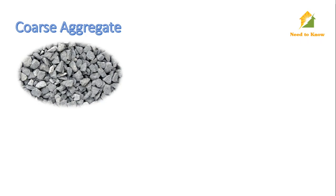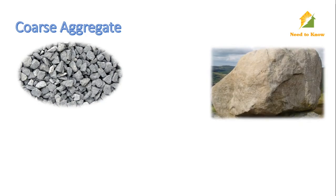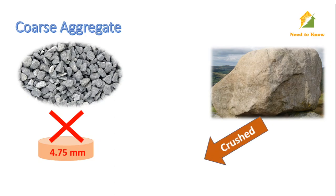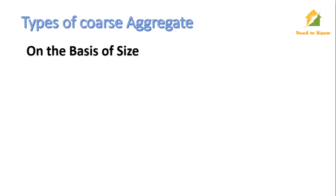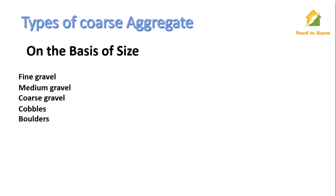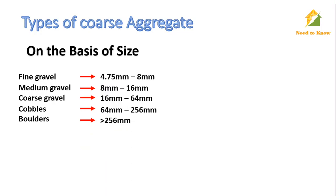Coarse aggregates are a construction component made of rock quarried from ground deposits, and will not pass through a sieve with 4.75 millimeter openings. Rock quarries are crushed and converted to different sizes. On the basis of size, coarse aggregates are classified as fine gravels, medium gravels, coarse gravels, cobblers, and boulders, with specific size ranges for each.